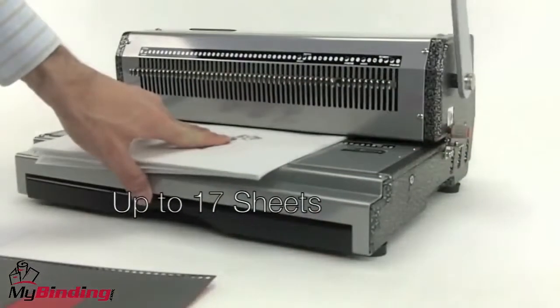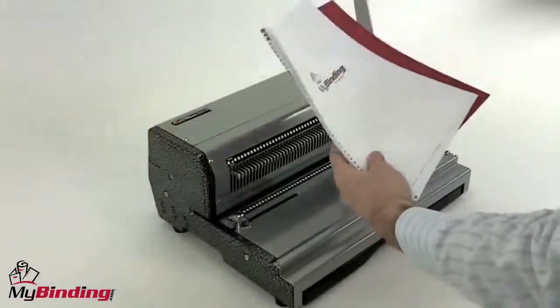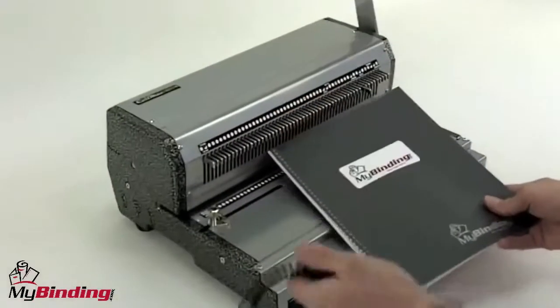Continue on through the rest of your project, punching up to 17 sheets of 20lb paper per lift. With your project all punched, it's time to bind.